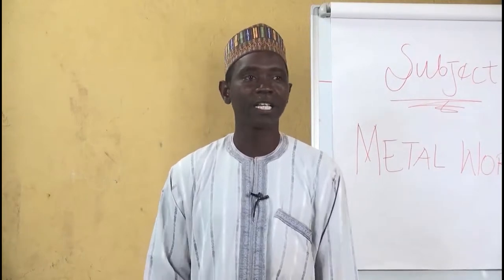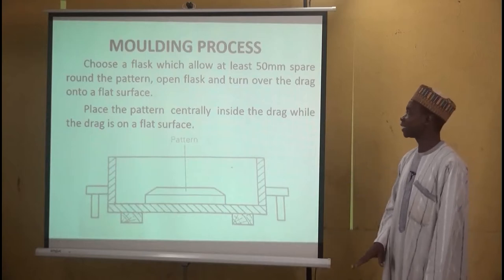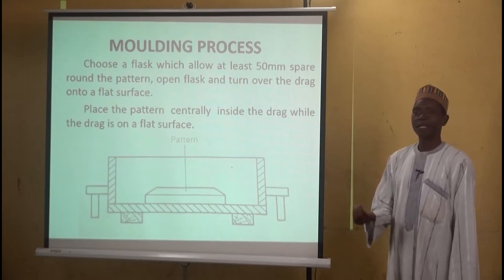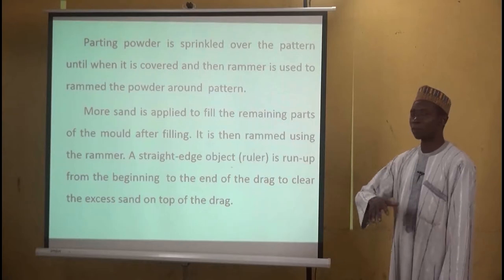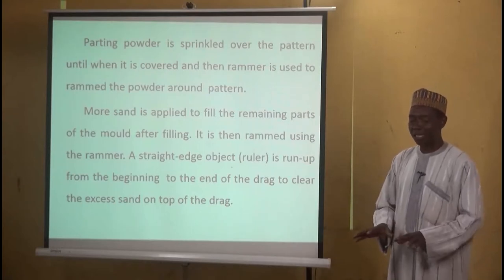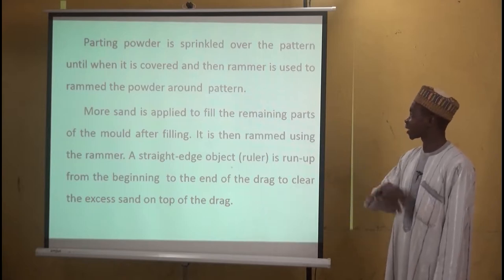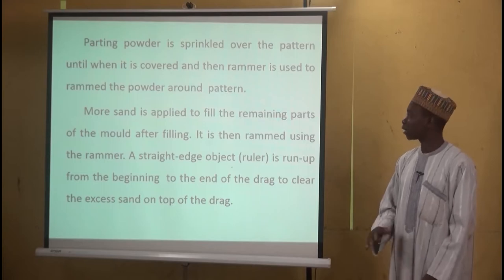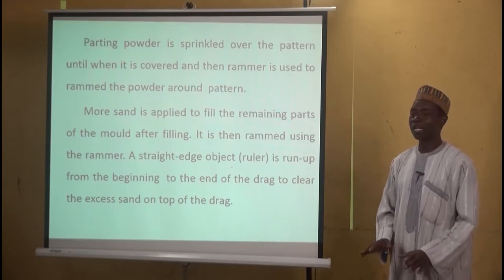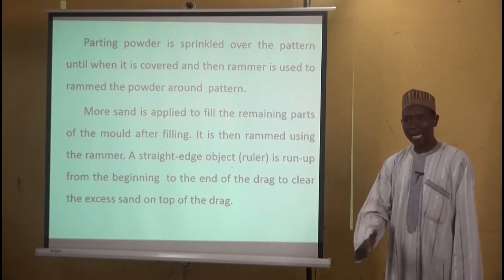You separate the two and take the drag. You overturn the drag and put it on a flat surface. By placing the drag on a flat surface, you come with the pattern and put the pattern centrally inside the drag. After that, you come with sand and sprinkle it on top of the pattern, covering the pattern with that sieved sand. Then you use a rammer to ram it. When you ram it round, you apply more unsieved sand to fill all other spaces within the drag. After ramming, you use a straight edge object — a ruler — to clear the excess sand from the top.